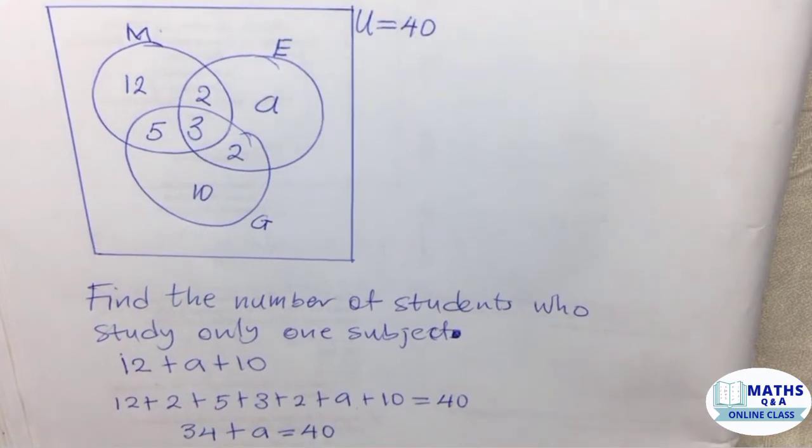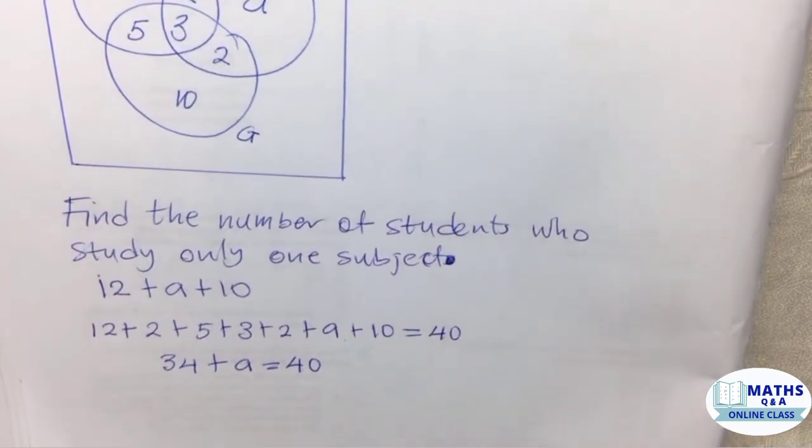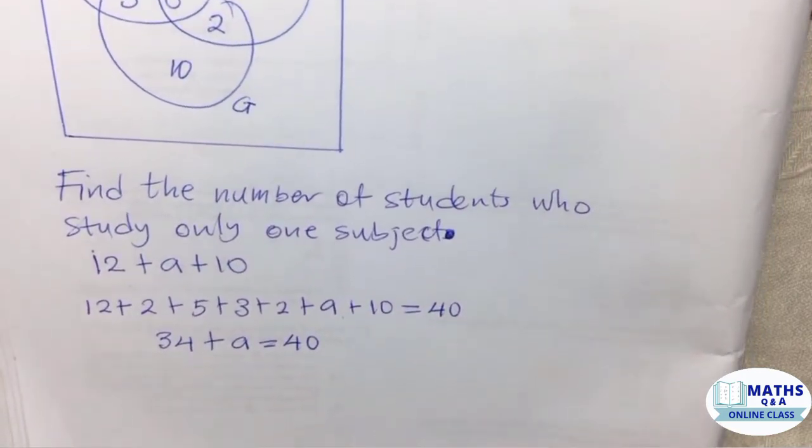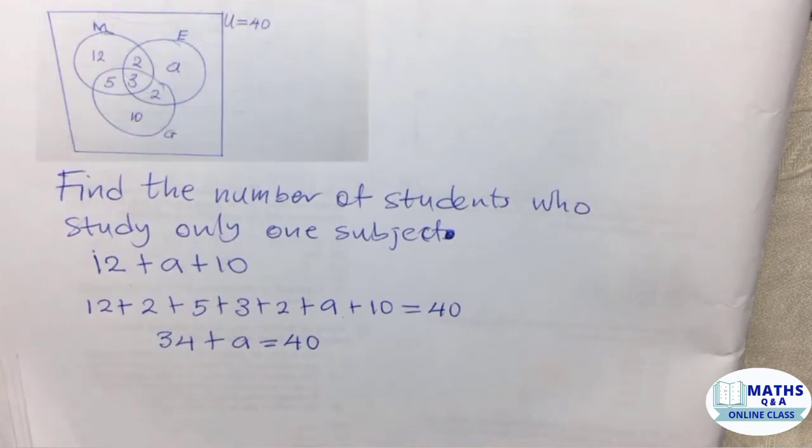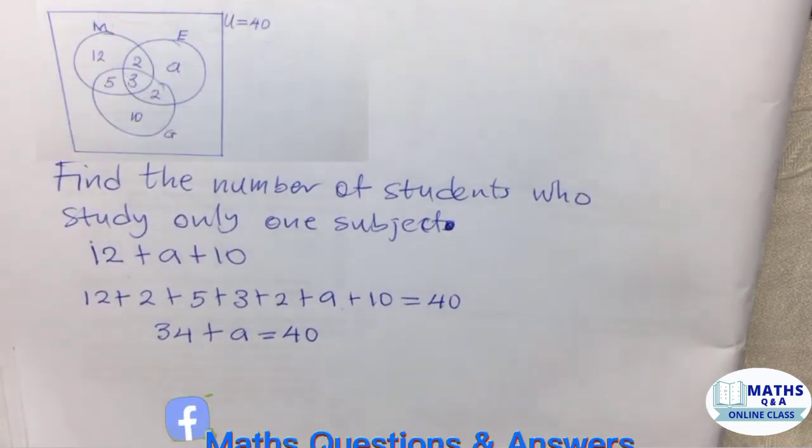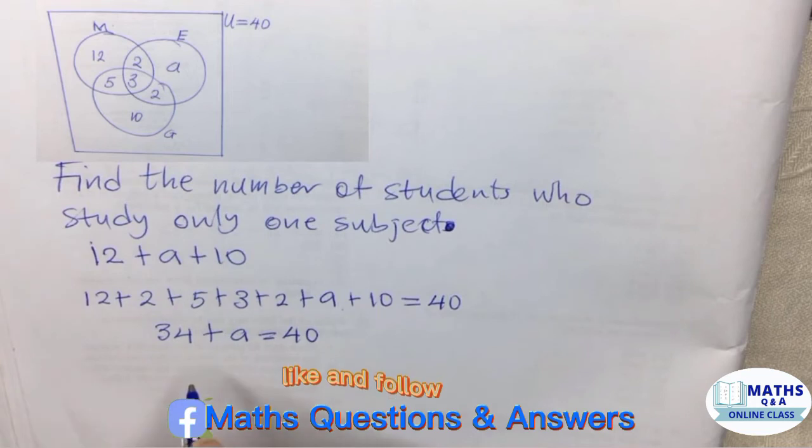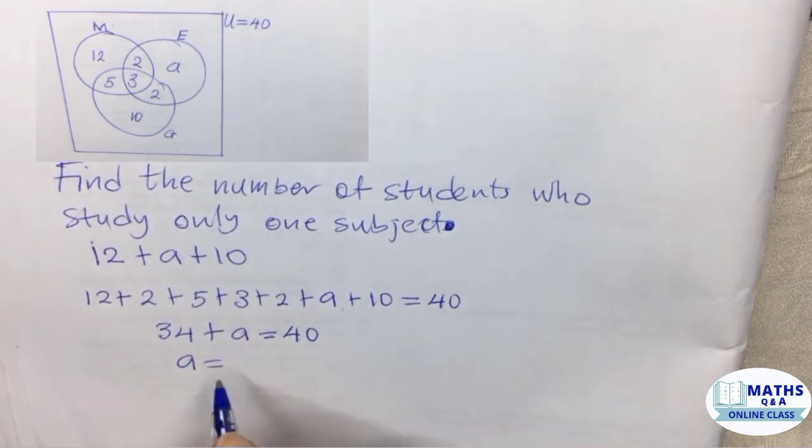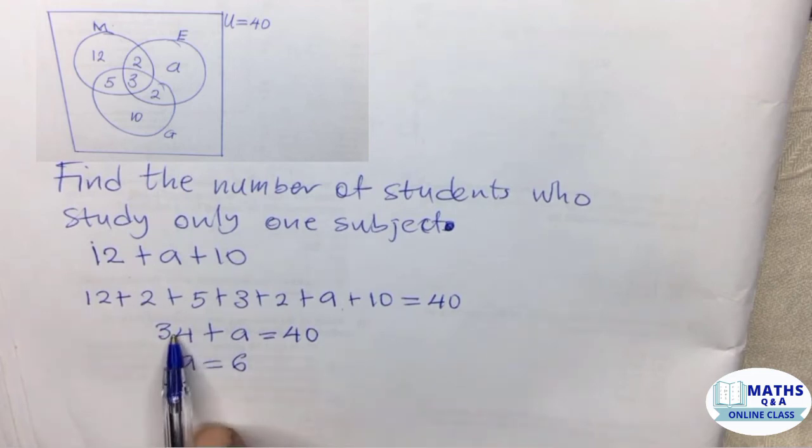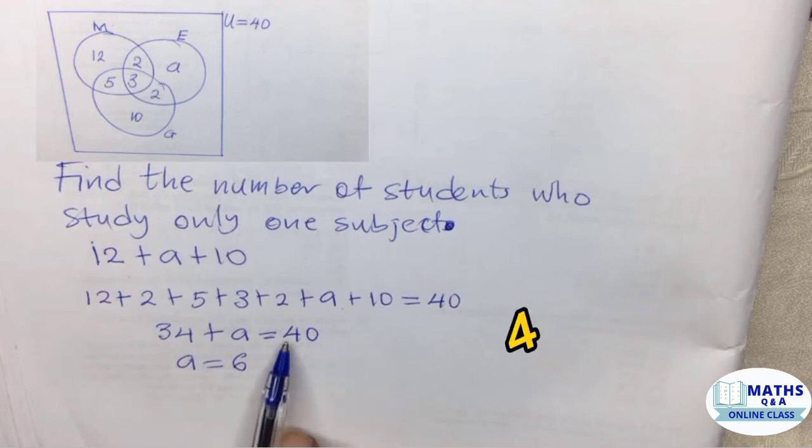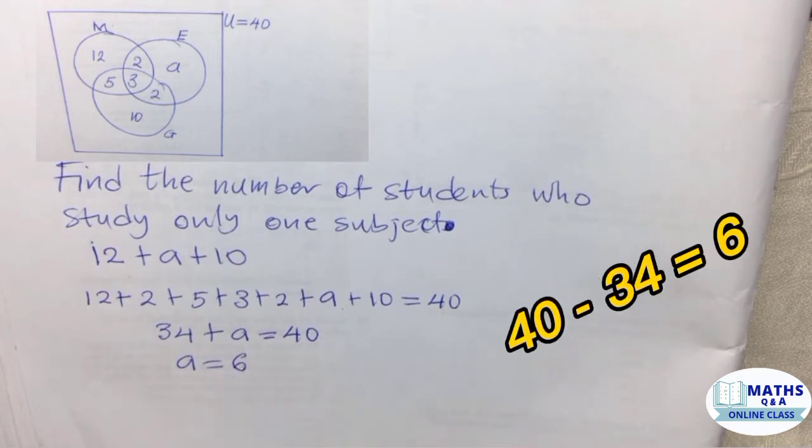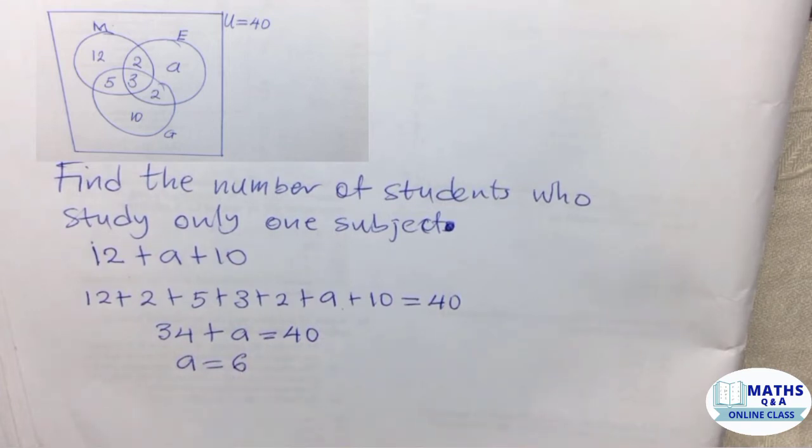Now let's find a. That means we have to make a the subject. a equals 6. We will send the 34 across the equal sign, so it's going to give us 40 minus 34, and that equals 6. Now that we have the value for a, which is economics only.